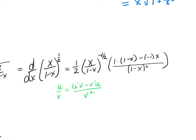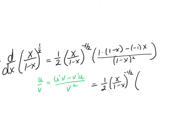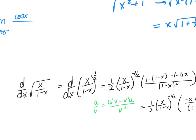Cleaning this up: I have 1 half times (x/(1−x)) raised to the negative 1 half, and then over here I end up with 1 minus x plus x — wait, that gives 1 — over (1−x)² . So in the denominator I end up with 1 over (1−x)² after the quotient rule.